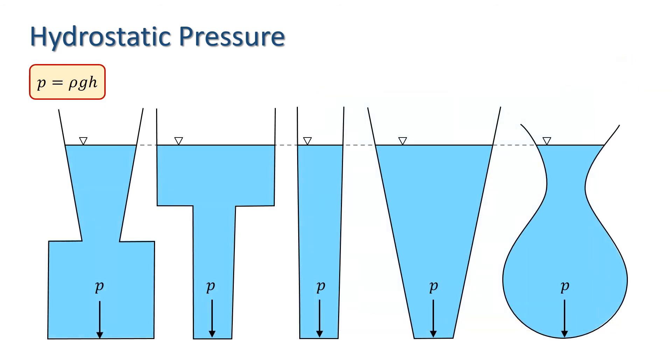Thus, the pressure at the bottom of each of these containers will be equal because the fluid depth is equal in all five containers.